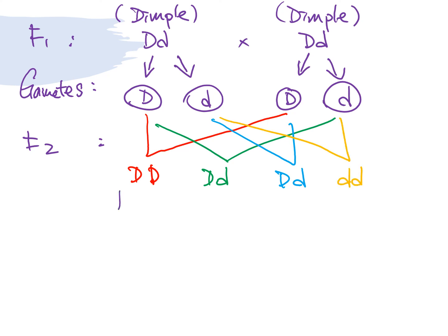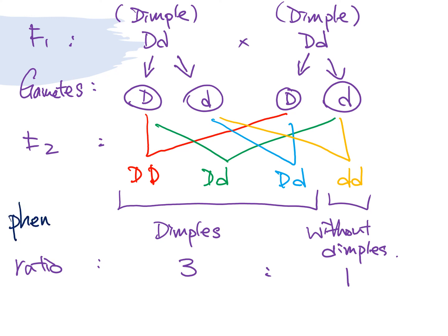And now, what do you see? You will be able to see the first three, they all have dimples. And the final one, it has no dimples. What is the ratio that you get? You get 3 to 1. And for the part of the dimples, without dimples, this is the phenotype, the characteristics.